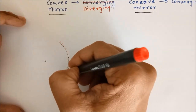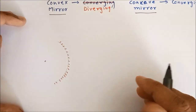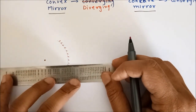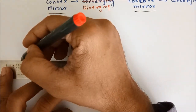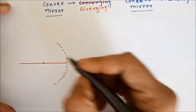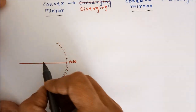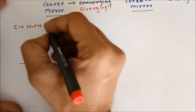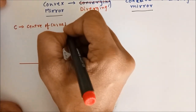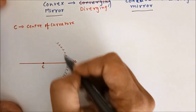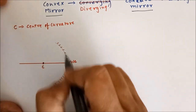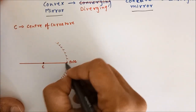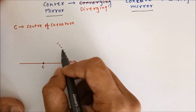This is my convex mirror that is ready. From here, if I draw a straight line from the centre, I will get this point as the pole of the mirror. This point is called C, and C is the centre of curvature. The centre of the entire mirror — this mirror is actually made from a hollow glass sphere — so the centre of that glass sphere is the centre of curvature. The point where this extended line meets the mirror is called the pole.